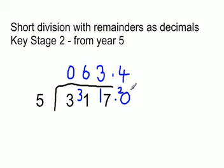So how many fives into 317 would go? 63.4. And remember the zero has no meaning here, so when you write the answer you would just write 63.4.